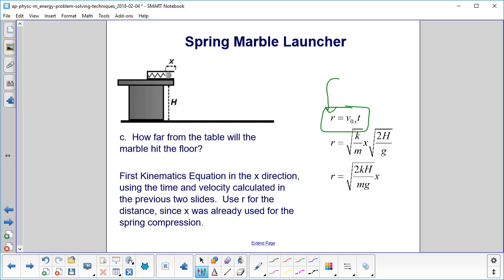Note that we're calling it r here because we already used x to show the compression of the spring. We don't want to confuse that with this distance, so we'll call it r for range.